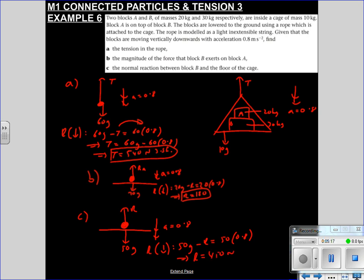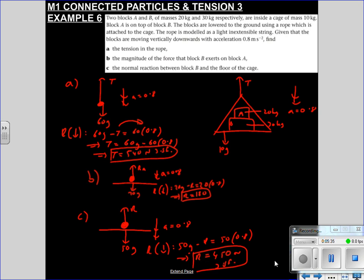And therefore R is 50g subtract 50 times 0.8. So 450 newtons to 3 significant figures. Cool. So hopefully this is starting to flow quite easily for you now. Let's move on to the next problem.